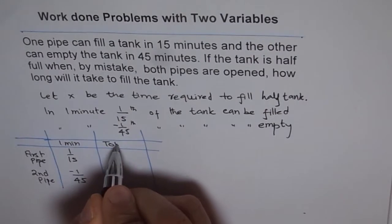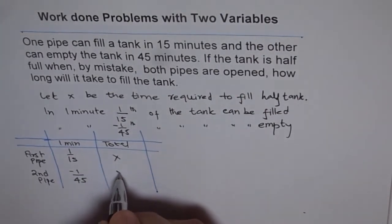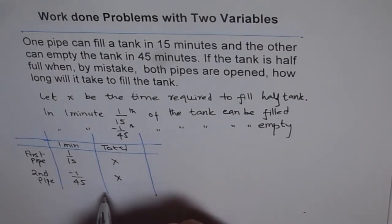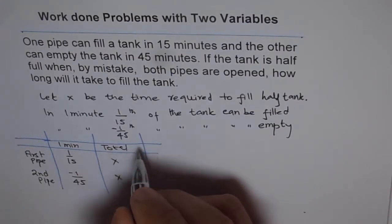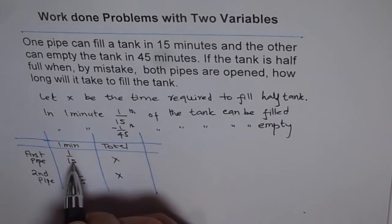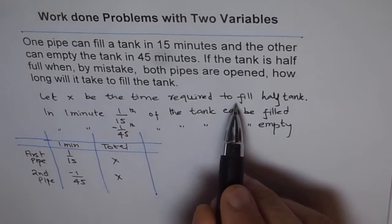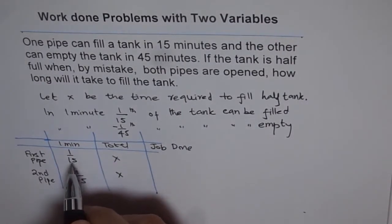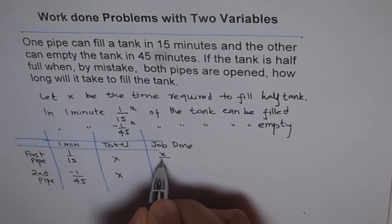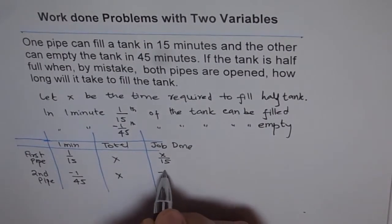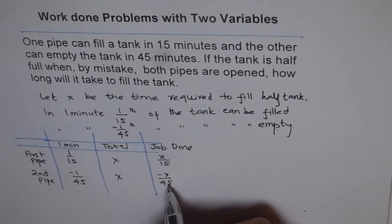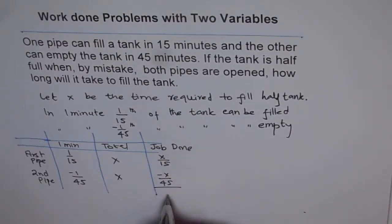The total time both pipes work together is x minutes. The fraction of work each pipe has done to complete the job — filling half the tank — is the per-minute rate multiplied by the total time. So the job done is x/15 for the first pipe and minus x/45 for the second pipe. When they work together, half of the tank is filled, so when you add them up, you get half the tank full.